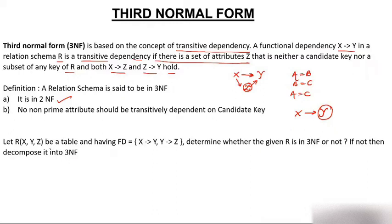Now the question: let R be a table having the following functional dependencies: X→Y and Y→Z. Determine whether R is in 3NF or not. If not, then decompose it into 3NF.